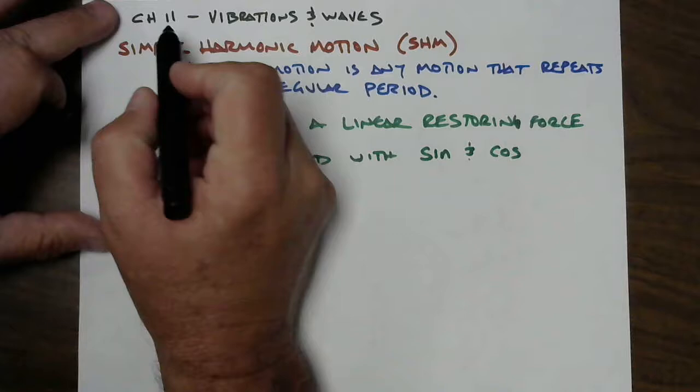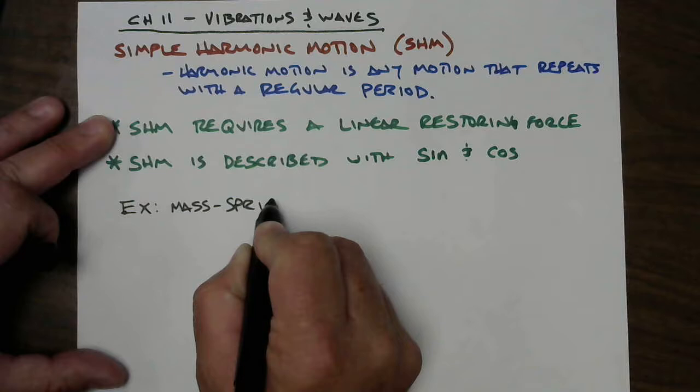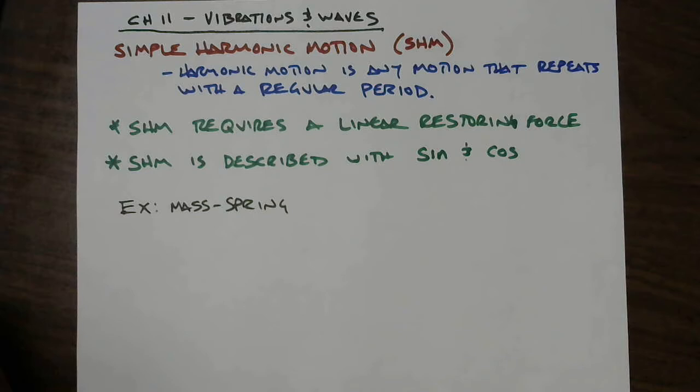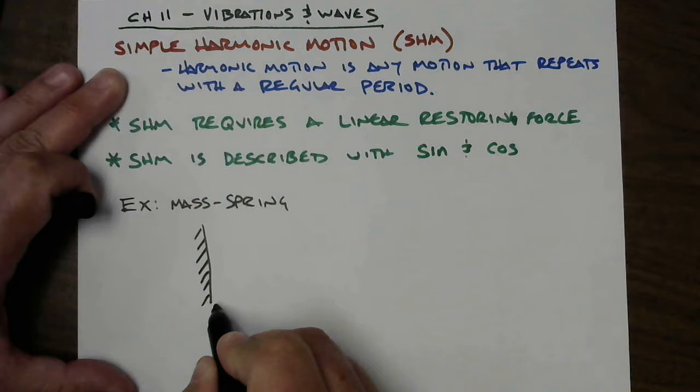Because of that, simple harmonic motion is described mathematically with sines and cosines. So the equations will be very easy to understand, the motion is very easy to understand - very smooth, sinusoidal type of motion. We're going to focus on one example and take it apart: the mass and spring system.